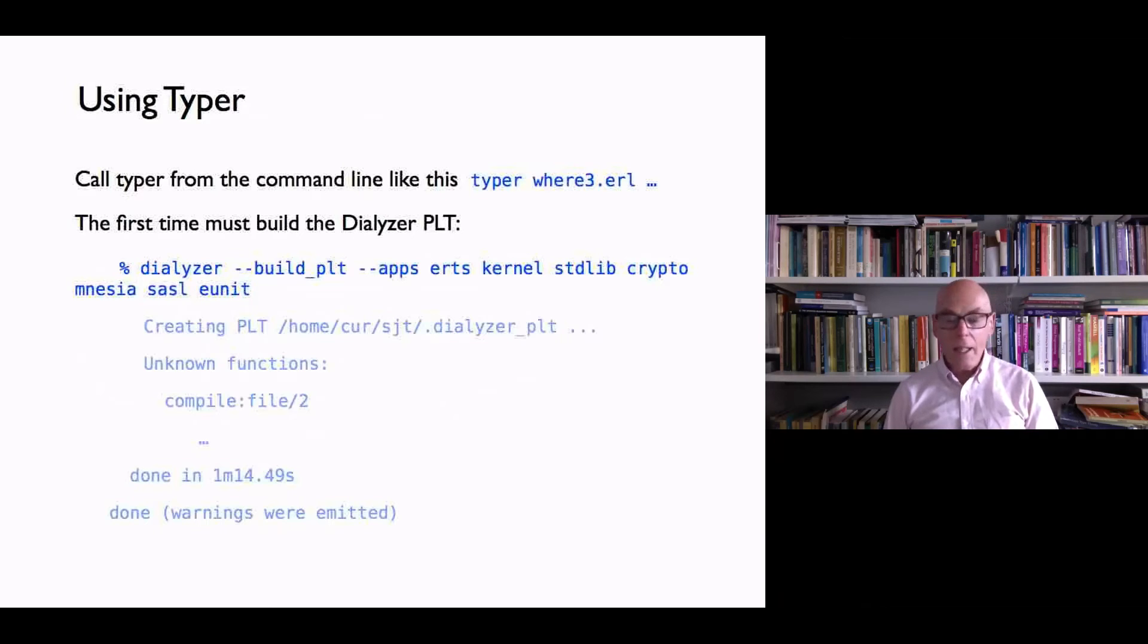As I said, Typer is built on top of Dialyser, and Dialyser itself has some persistent data that it uses to speed up its analyses. Dialyser works by analyzing all the Erlang code base that you might be using, including the Erlang system itself. And so what it needs to do is build this persistent database of information when you first run it. And this is what we're doing here, building the so-called Dialyser PLT. And as you can see in the lower half of the screen, it took one minute 14.49 seconds.